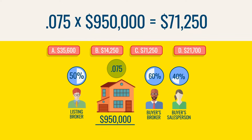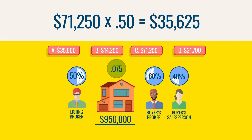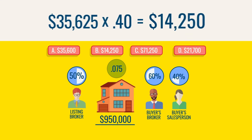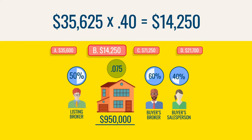With total commissions of $71,250, the selling and listing brokers split 50-50 — each side gets 50%. $71,250 times 0.5 equals $35,625. The salesperson gets 40% of that: $35,625 times 0.4 equals $14,250. The answer is B, $14,250.